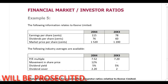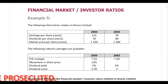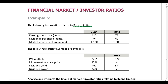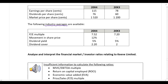I want you to jump to lecture example 5 and we are going to work through this example applying everything provided in the lecture notes. In this example, the following information relates to Keen Limited. You've been given information for 20x4 and 20x3: earnings per share in cents, dividends per share in cents, and market price per share in cents. The required asks you to analyze and interpret the financial market or investor ratios relating to Keen Limited — that means we calculate and comment on the ratios.